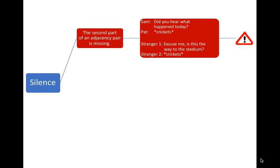It could be that the missing part of the adjacency pair conveys something efficiently, but I think generally this would indicate some kind of lack of smoothness or something not going well in the interaction.